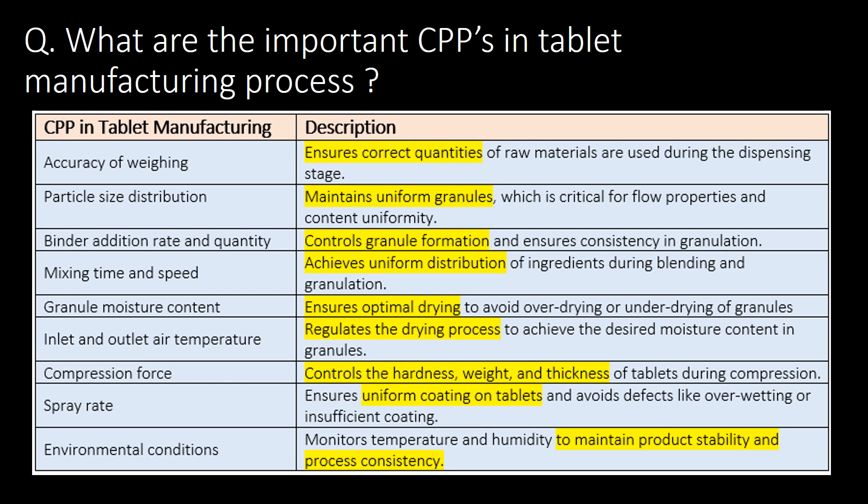What are the important CPPs in the tablet manufacturing process? The important CPPs in tablet manufacturing are: accuracy of weighing, particle size distribution, binder addition rate and quantity, mixing time and speed, granule moisture content, inlet and outlet air temperature, compression force, spray rate, and environmental conditions.